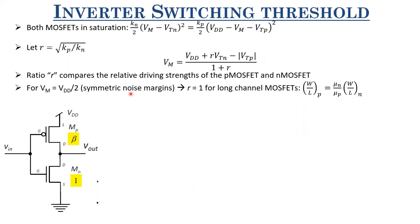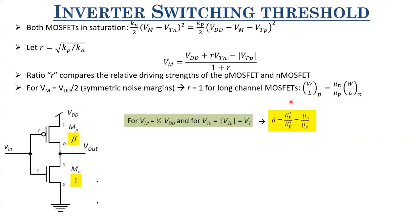We also want TPLH = TPHL (equal propagation delays), which also requires matched driving strengths — this will be discussed in the next lecture on transient response. For short-channel MOSFETs with velocity saturation, the VM formula changes: R = (Kp·Vdsat_P) / (Kn·Vdsat_N), and the W/L ratio of PMOS to NMOS must account for these additional Vdsat components to achieve VM = Vdd/2.